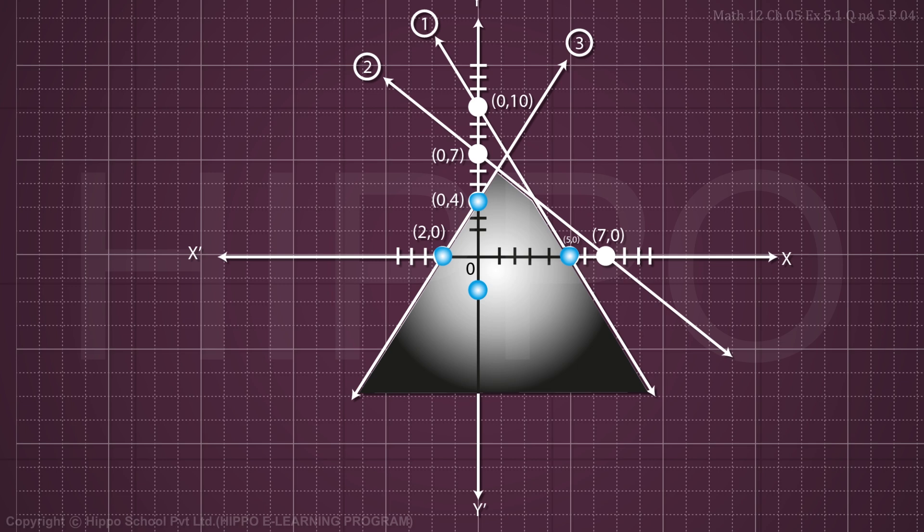You can shade the regions with different colors for each inequality. When all three shadings overlap, that common shaded region is the solution region of the system.